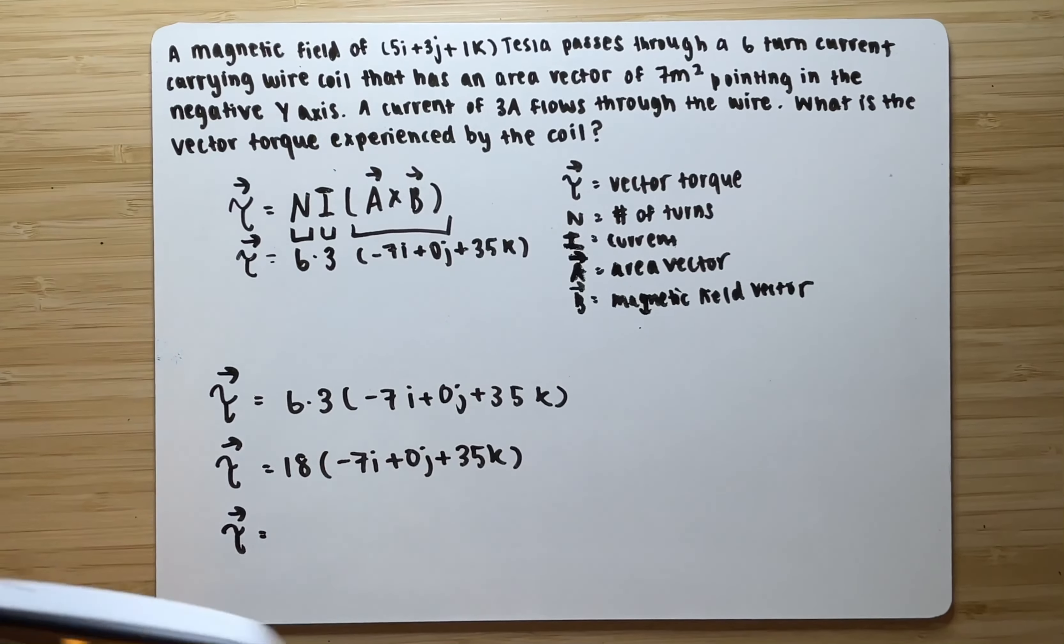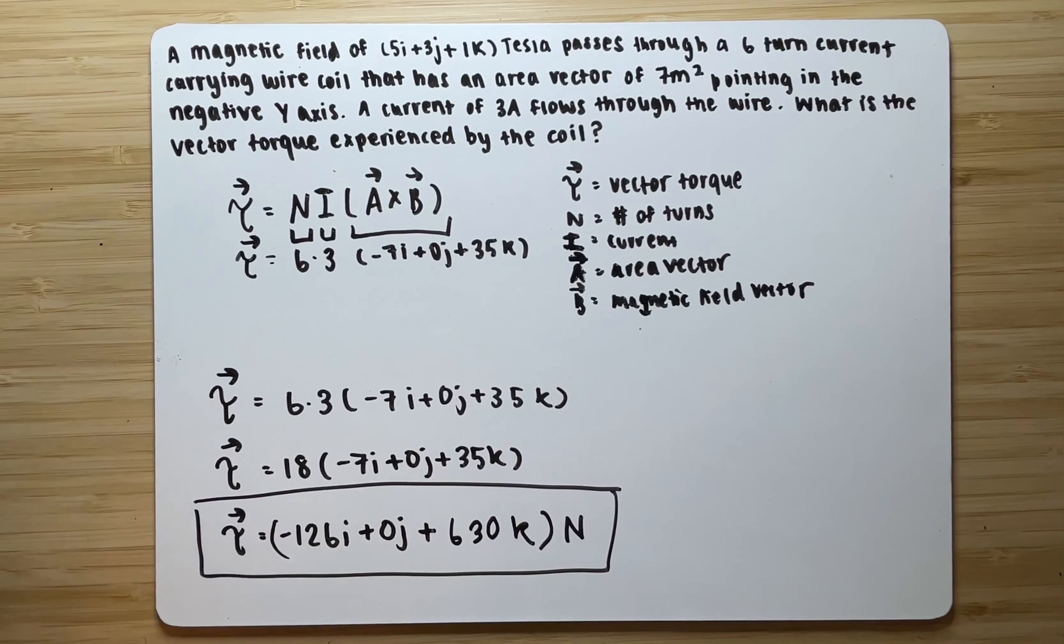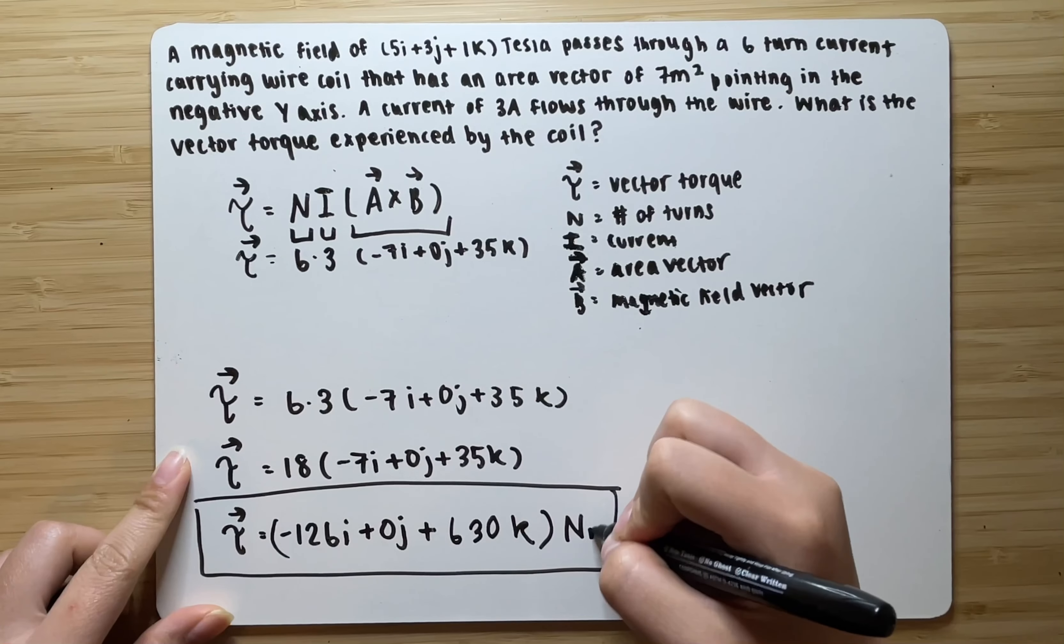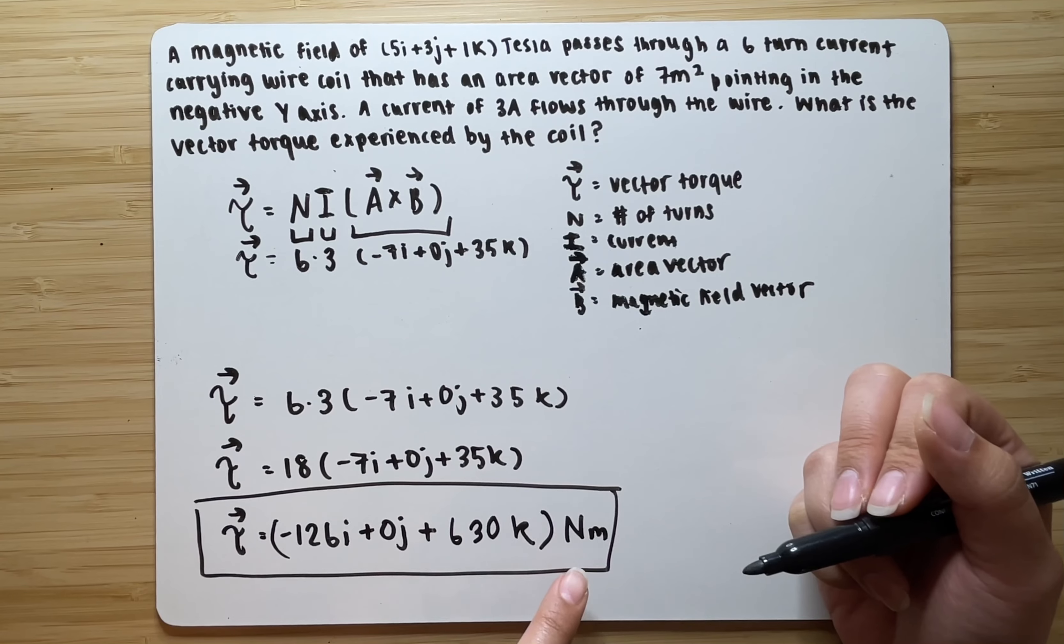Units will be in newtons. And here you have your answer. Just kidding. N is not going to be your units. It's going to be newtons meter. Remember, for vector torque, your unit is newtons meter.